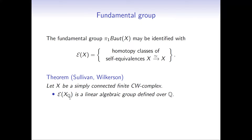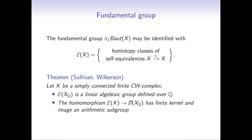If X is a simply connected finite CW complex, then the group of self-homotopy equivalences of the rationalization of X turns out to be a linear algebraic group defined over Q. Every simply connected space admits a rationalization, which on the level of homotopy groups has the effect of tensoring everything with Q. Rationalization induces a homomorphism from self-equivalences of X to self-equivalences of the rationalization, and this group homomorphism has finite kernel, with image an arithmetic subgroup of this linear algebraic group.